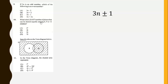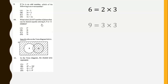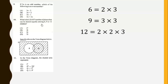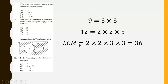What is the least number of plums that can be shared equally among 6, 9, or 12 children? We need to find the LCM of 6, 9, and 12. The LCM is 36, so 36 plums is the least number that can be shared equally among 6, 9, or 12 children.